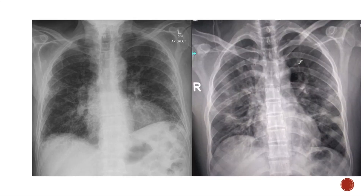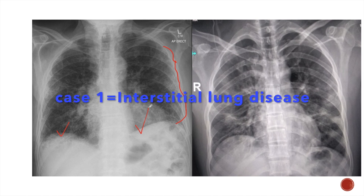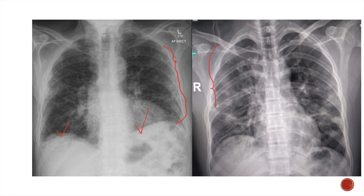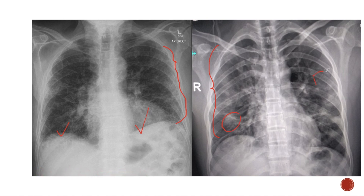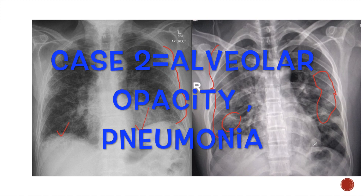Coming back to our initial query: in the first X-ray we can see multiple net-like opacities in both lungs which do not tend to coalesce, and are bilateral and more or less symmetrical. These are interstitial opacities, and this is a case of interstitial lung disease. But in the second X-ray we can see multiple opacities that tend to coalesce and form patches. These are bilateral but asymmetrical, and these are alveolar opacities. This is a case of viral pneumonia.